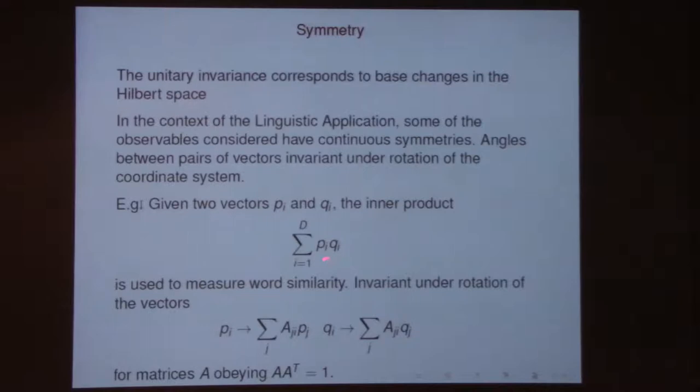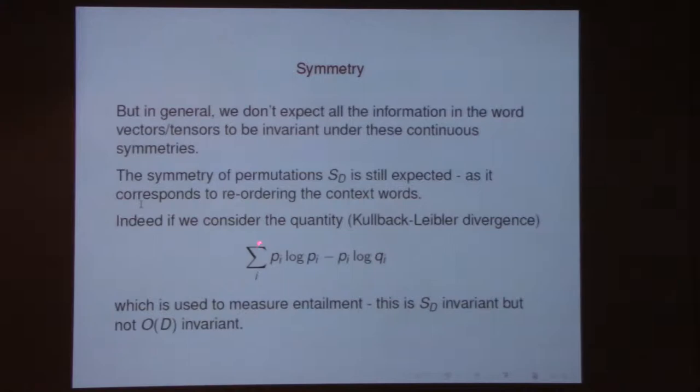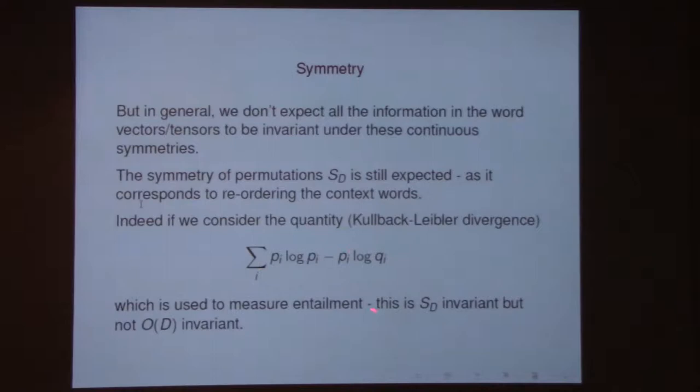There are other things they do with these word vectors. For example, they want to know whether the word described by vector P and the word described by vector Q have some sort of relationship — does the first word entail the second word. One of the things they use is the Kullback-Leibler divergence. Now this is a thing which is not O(D)-invariant, but it is S(D)-invariant.